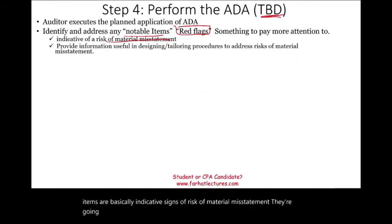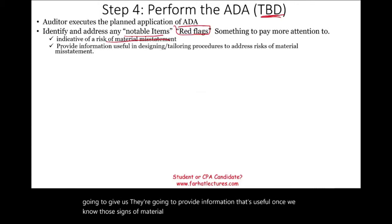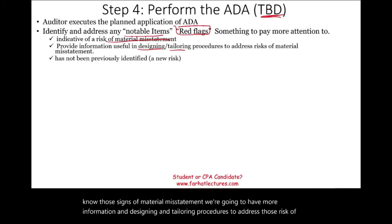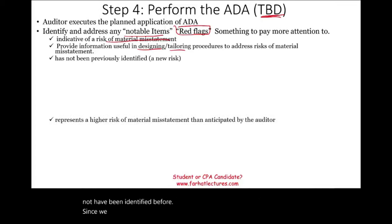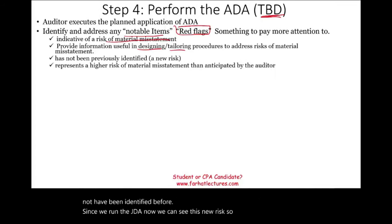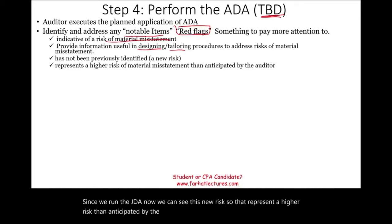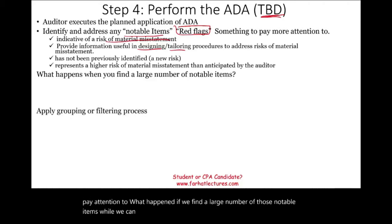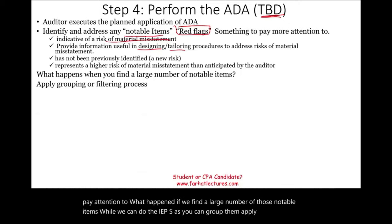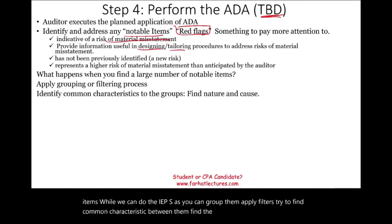Notable items provide useful information: they are indicative signs of risk of material misstatement. They give us information useful in designing and tailoring procedures to address those risks. Some risks may not have been identified before running the ADA, so they represent a higher risk than anticipated. If we find a large number of notable items, the AICPA suggests grouping them, applying filters, and finding common characteristics to identify their nature and cause, since you may not have enough time to address all of them.